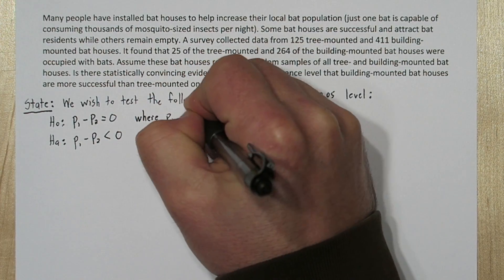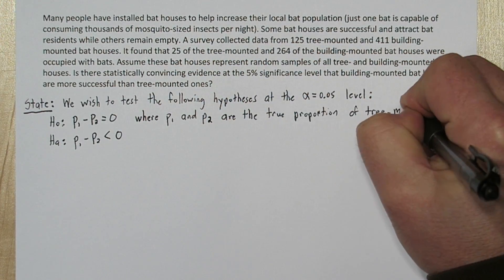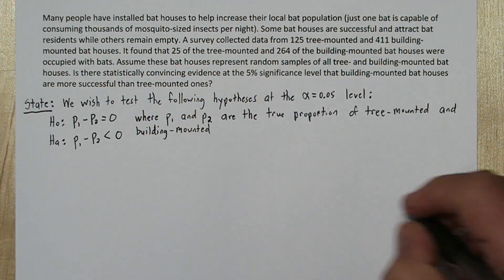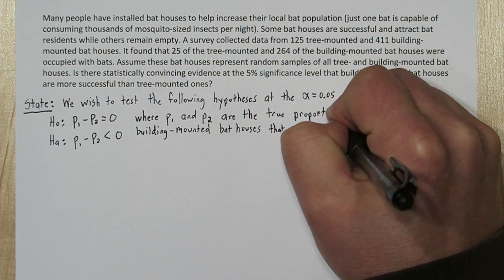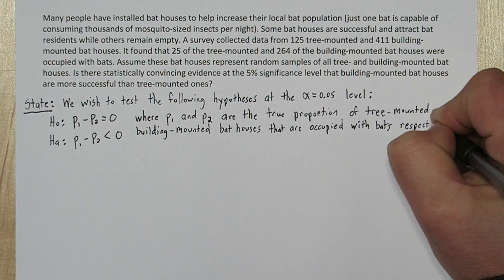Where P-sub-1 is the true proportion of tree-mounted bat houses that are occupied, and P-sub-2 is the true proportion of building-mounted bat houses that are occupied.